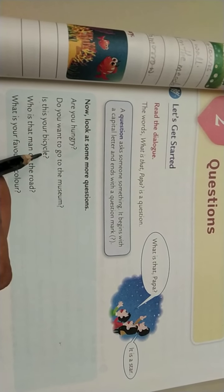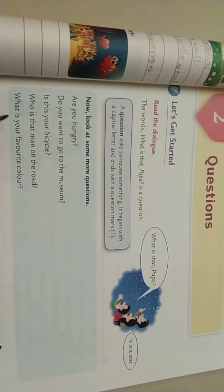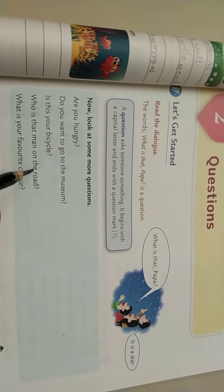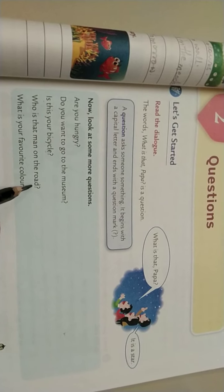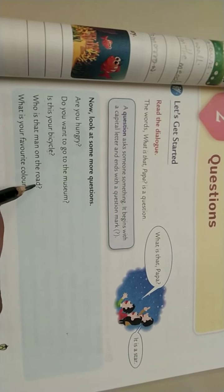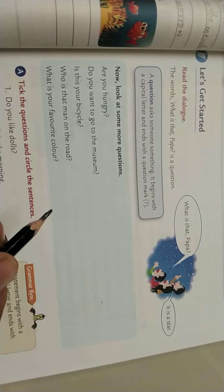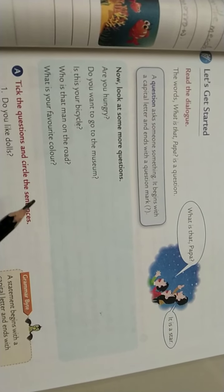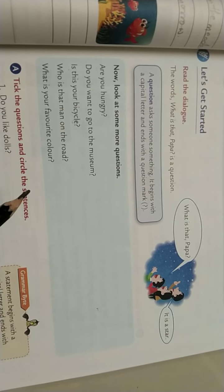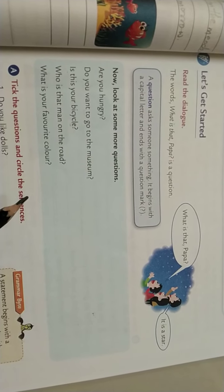Next one: Is this your bicycle? What will you give the answer as? Yes or no. Next: Who is that man on the road? So what will you say? Either if you know the man, you will say yes, I know — the man is my father, my brother, or whoever the man is. If you don't know who that man is, you will say I don't know who the man is.